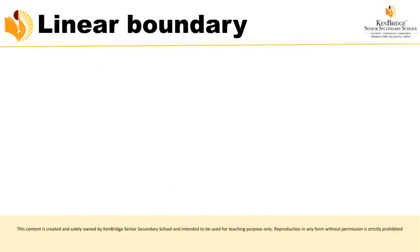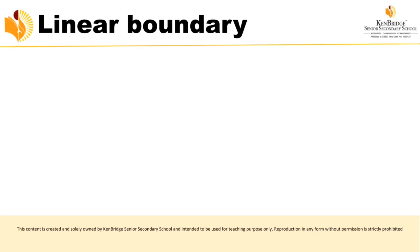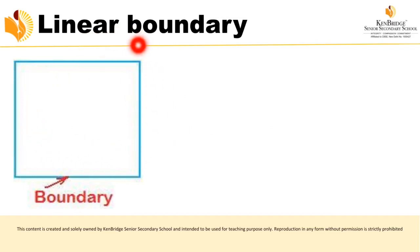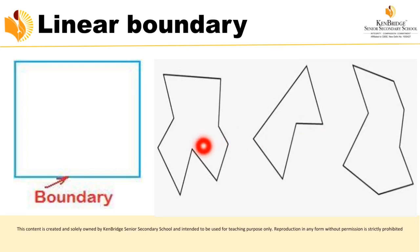Now we look at linear boundary. Similar to curvilinear boundary, the shape should be closed. If the boundary — the outline — is made up of straight lines, it is called a linear boundary. For example, a rectangle's outline is made up of four straight lines, so it has a linear boundary. If all lines are straight, it is linear boundary; if curved, it is curvilinear boundary.